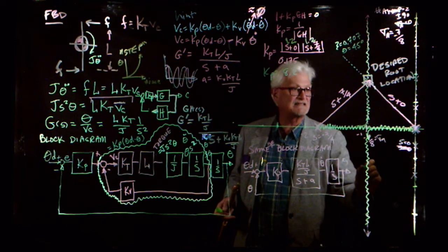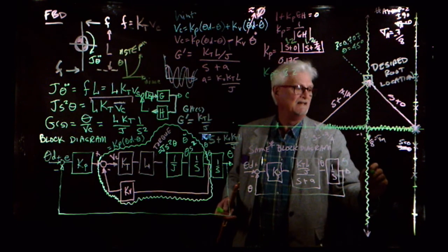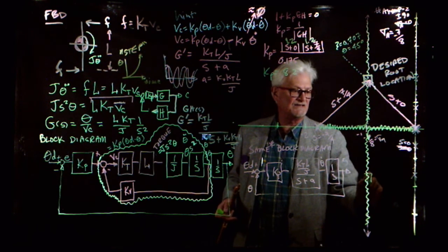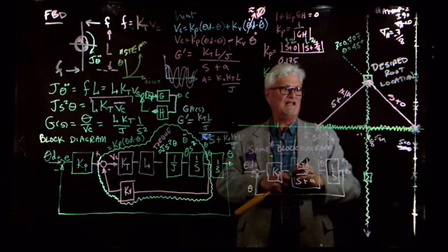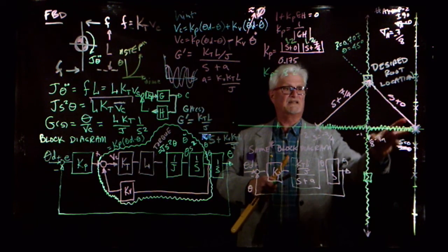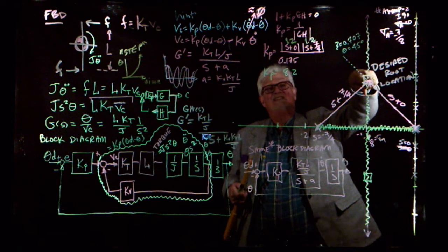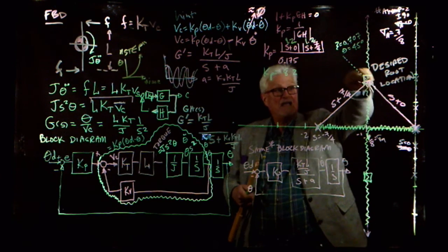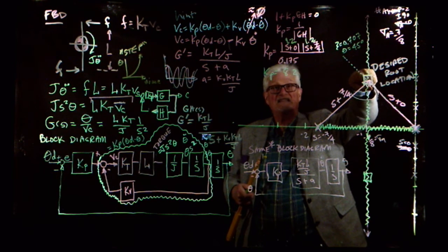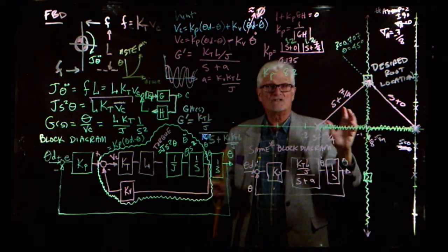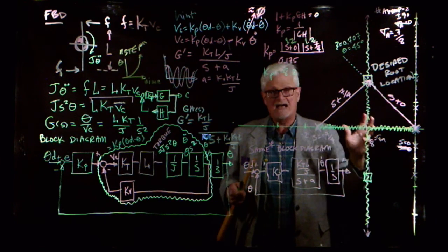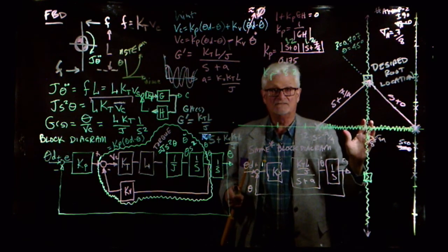So if I put a value of K_P that's 8.2, it should give me roots of the characteristic equation at the desired spot — there's another root in the complex conjugate below. I can go back in MATLAB and check to make sure everything works right.